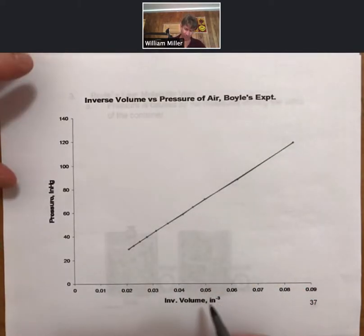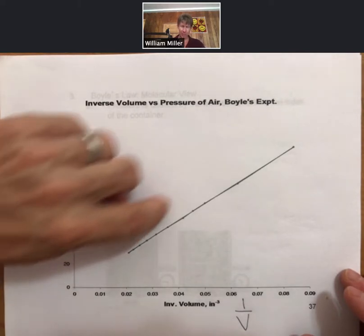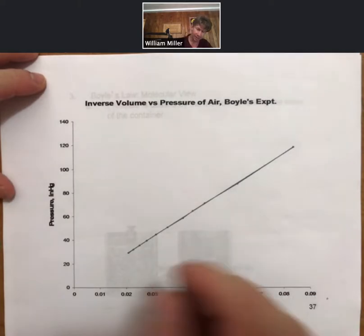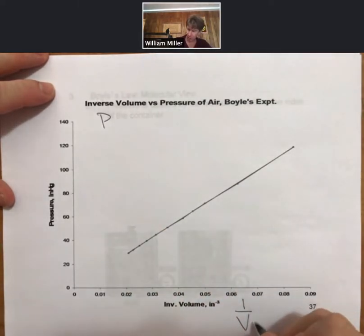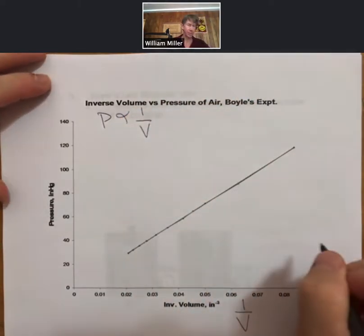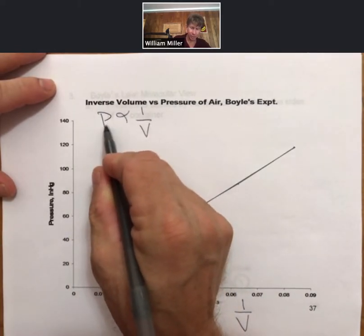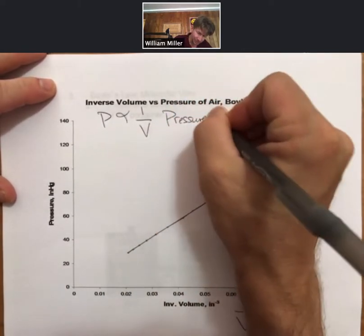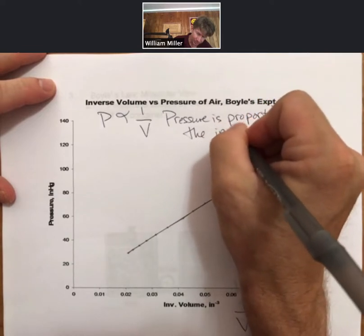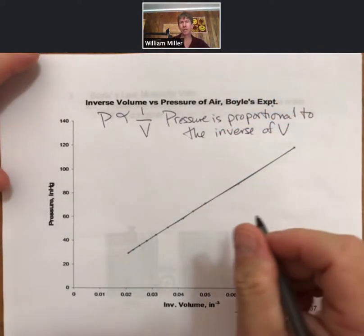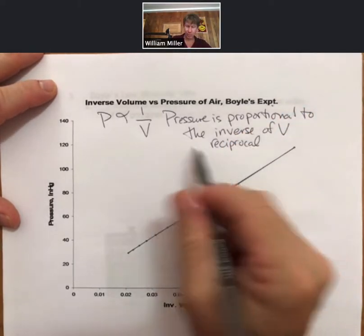What we would then do is find inverse volume, which is 1 over volume, versus pressure, and we would find that there is a linear relationship. So, we're finding that pressure is proportional to 1 over volume. This is also called that pressure is inversely proportional to volume, or pressure is proportional to the inverse of volume. Another way to refer to the inverse would be the reciprocal. Both of those are ways of saying 1 over volume.